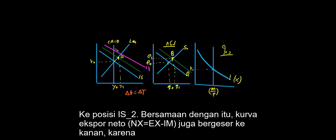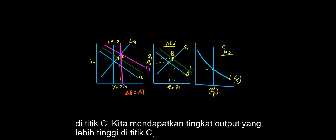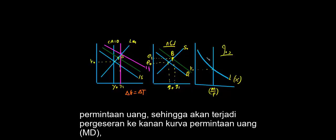At the same time, the IS curve shifts to the right to IS2. The curve where production equals output is also shifted to the right, because we have both an increase in demand and an increase in output — so we get a level of output at point C, a higher level of output with a higher interest rate in the money market. An increase in output will lead to an increase in the demand for money, so we will have a shift to the right of the LM curve and a higher interest rate in the money market.